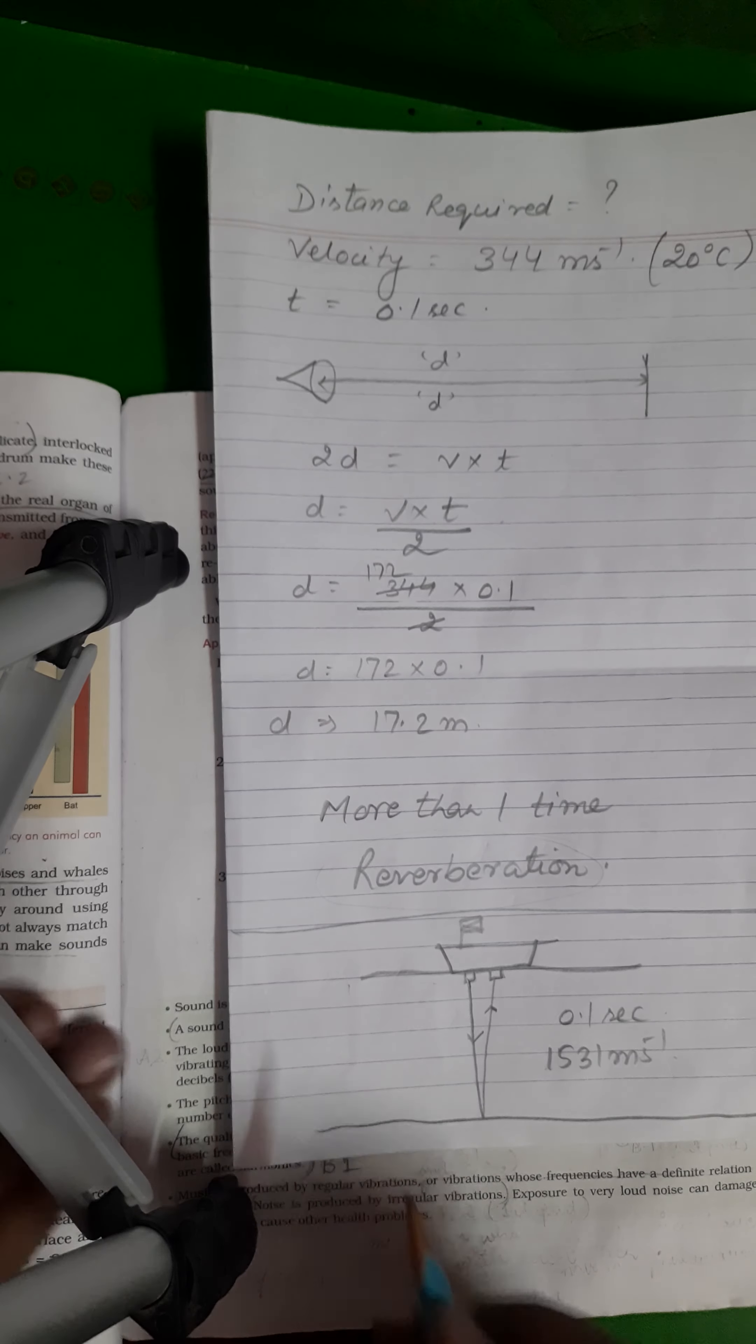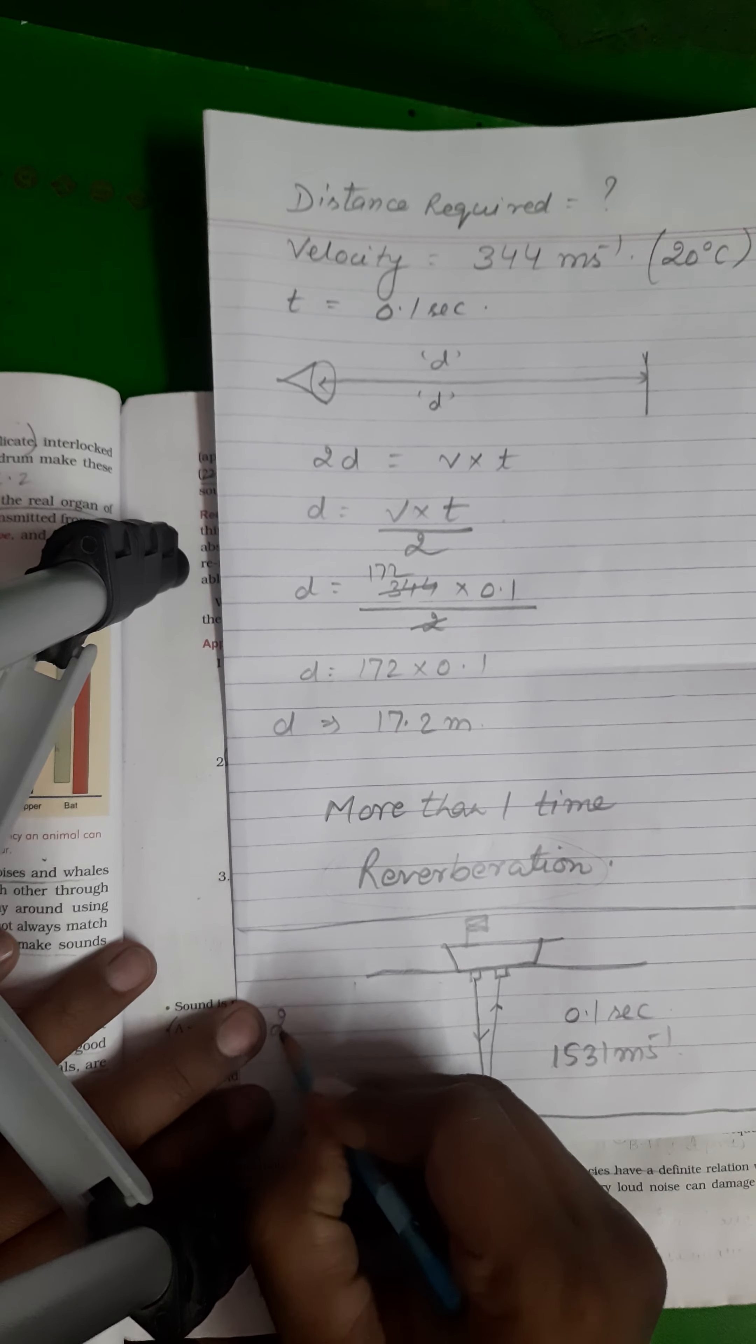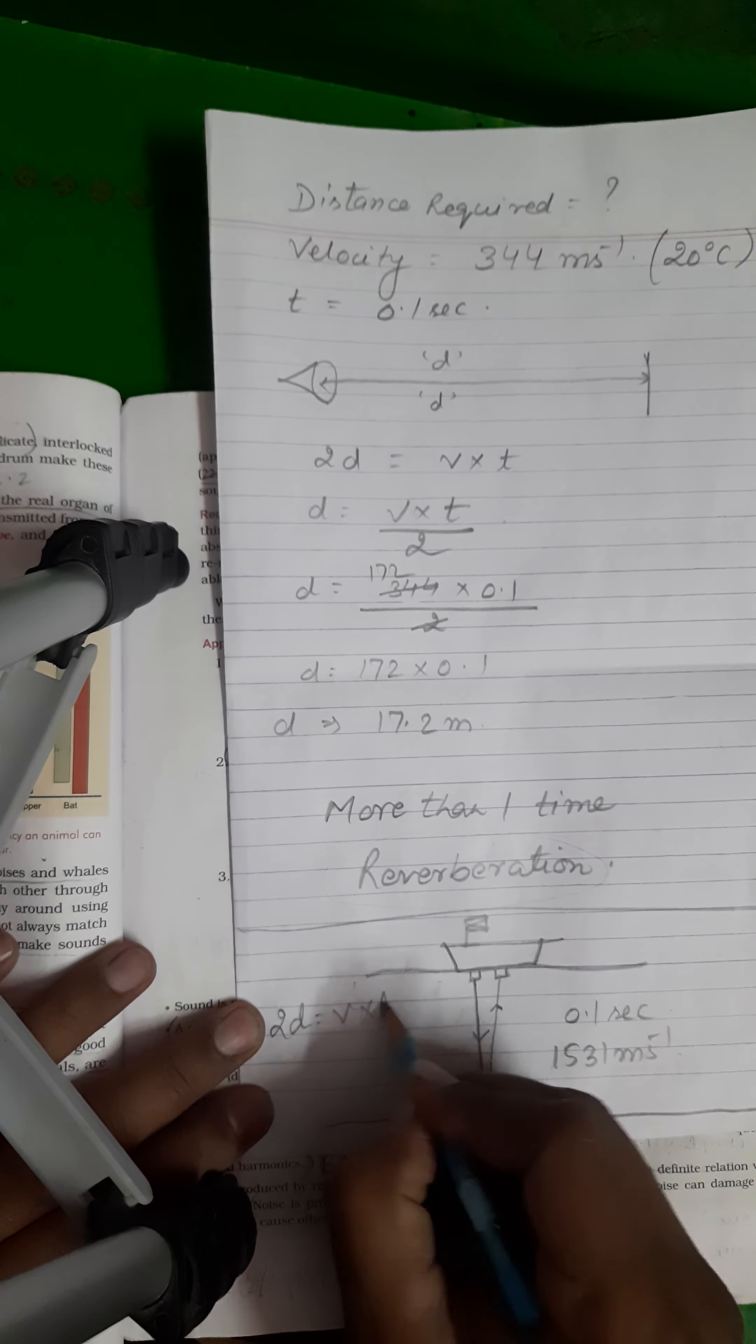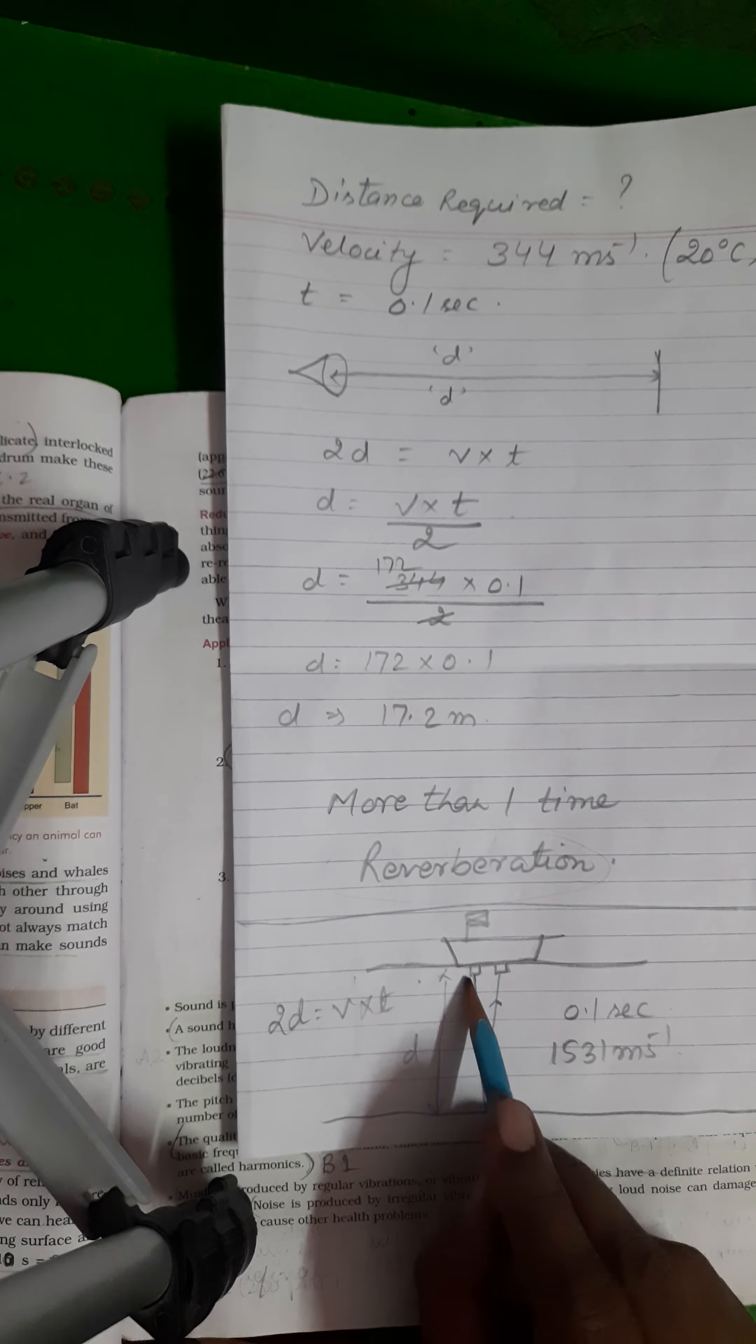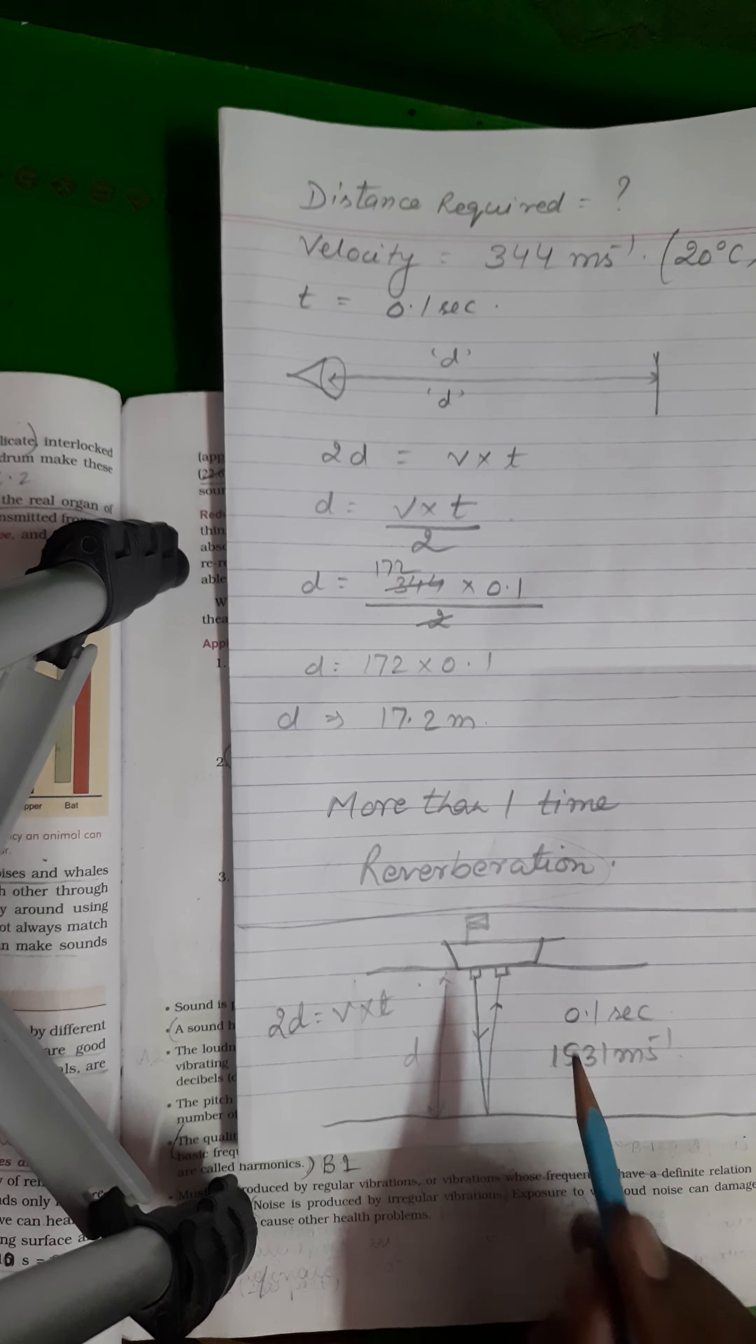What will be the distance? Again we have to apply the formula 2d is equal to velocity into time. Because if d is the distance, then one time it goes down and another time it comes upside.